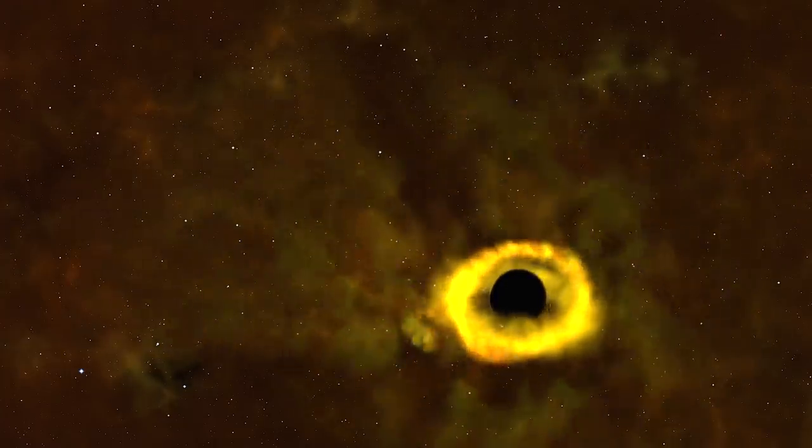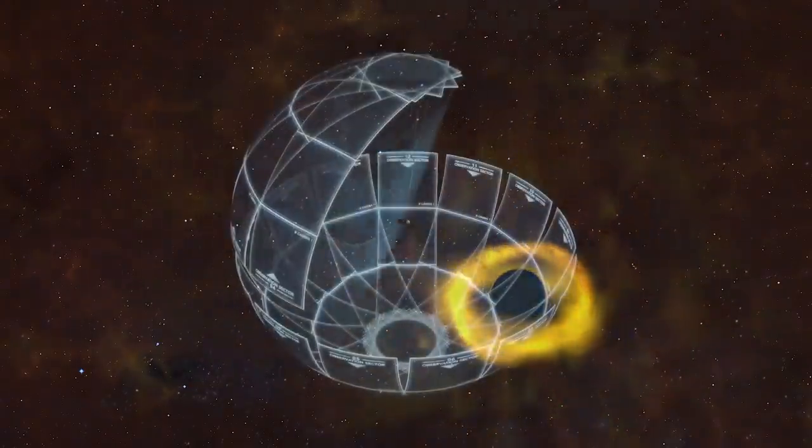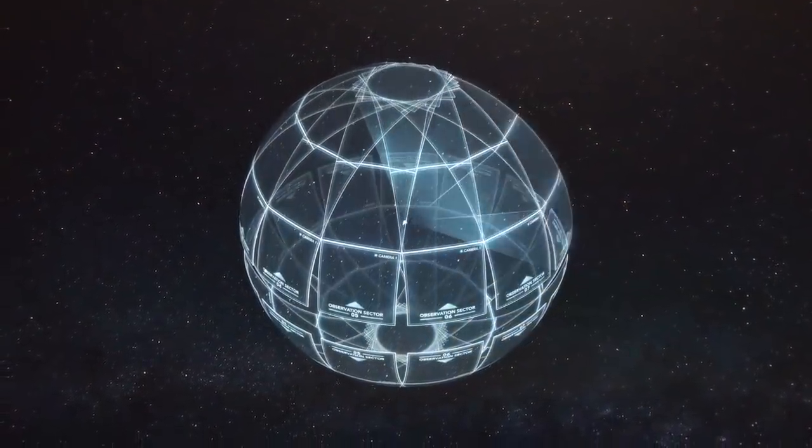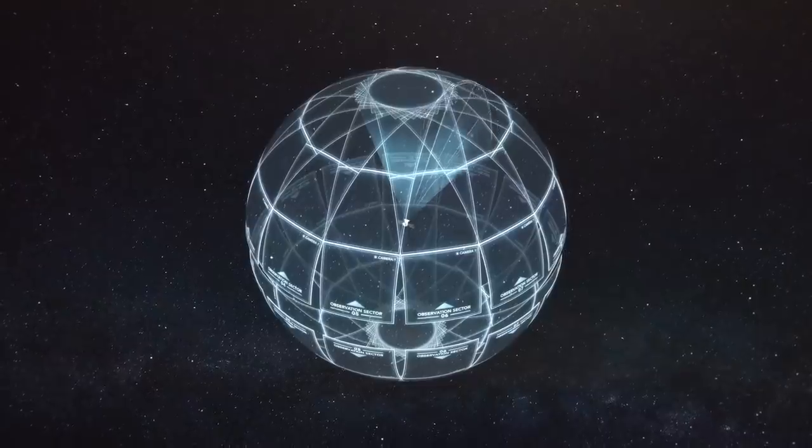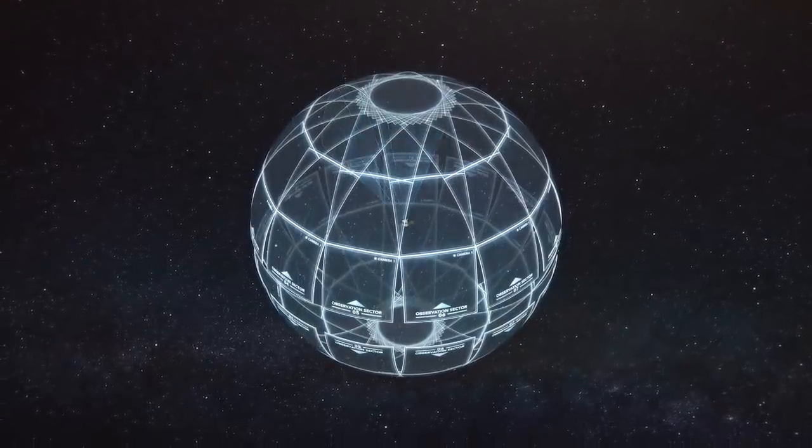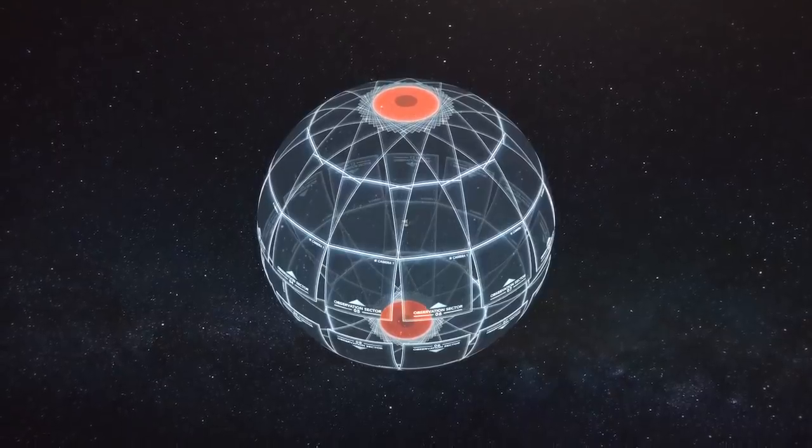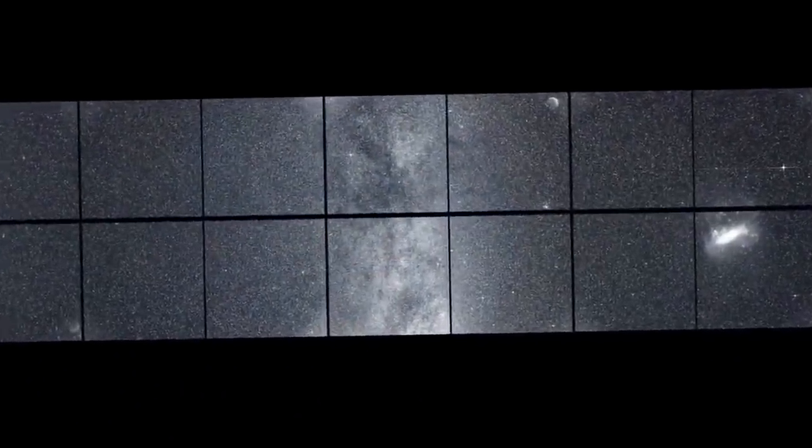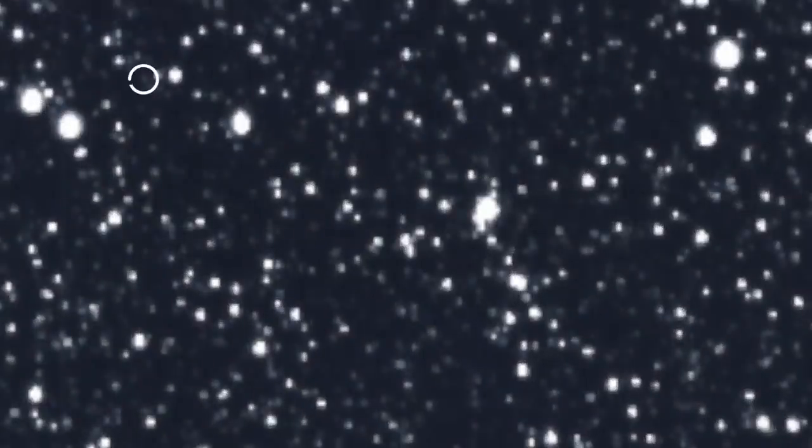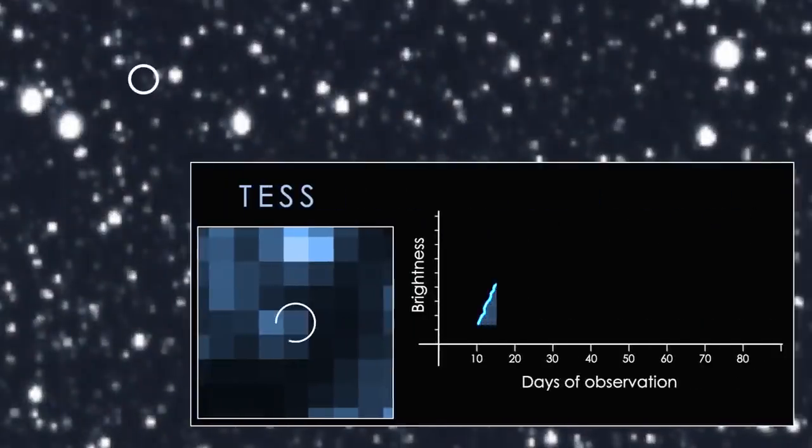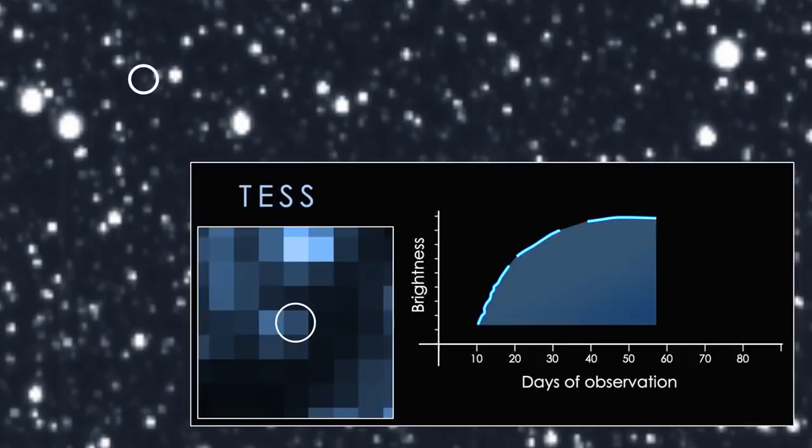This event, called ASASSN-19BT for the All-Sky Automated Survey for Supernovae which first identified it, happened in the TESS Continuous Viewing Zone. TESS's four cameras scanned large sectors of the sky, and one constantly monitored this region for a full year. TESS saw ASASSN-19BT as soon as it started to brighten, days before other observatories spotted it.